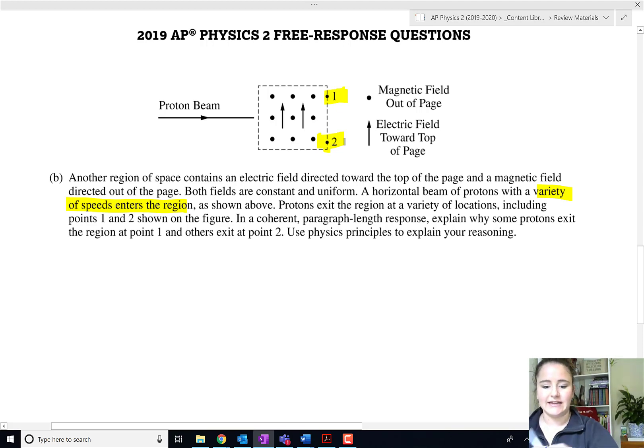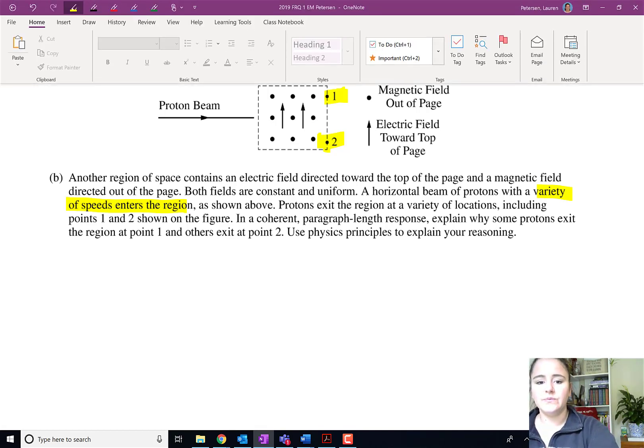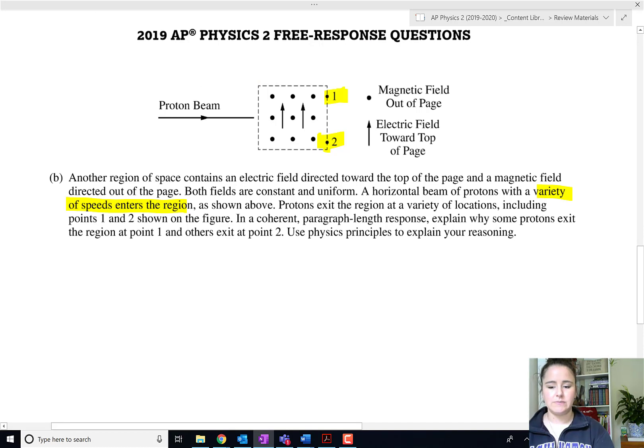It enters the region as shown above. Some exit at point one and some exit at point two. In a coherent paragraph length response, explain why some protons exit the region at point one and others exit at point two.